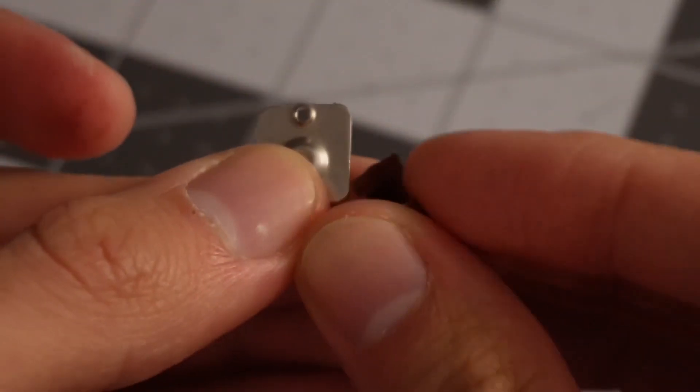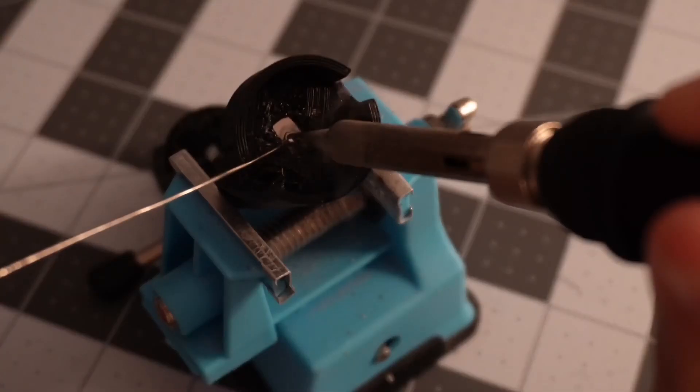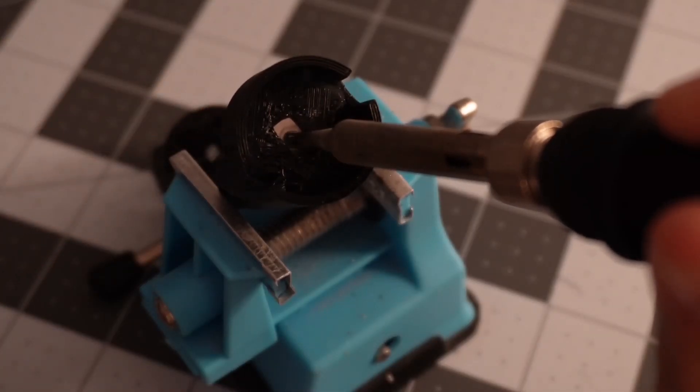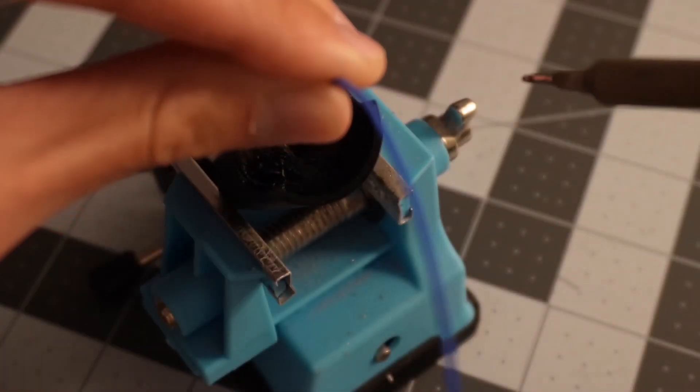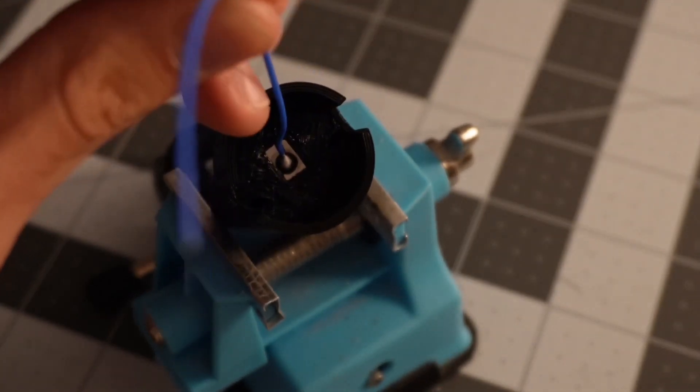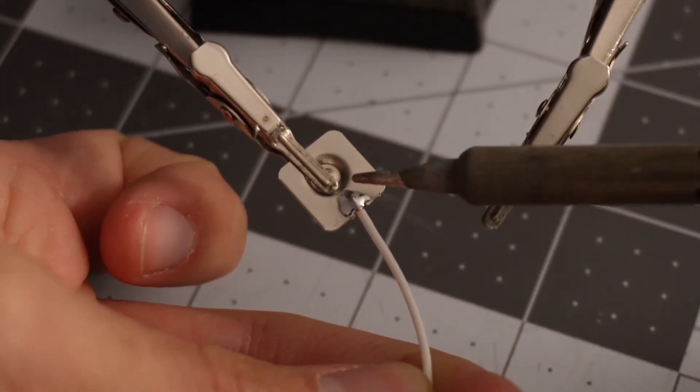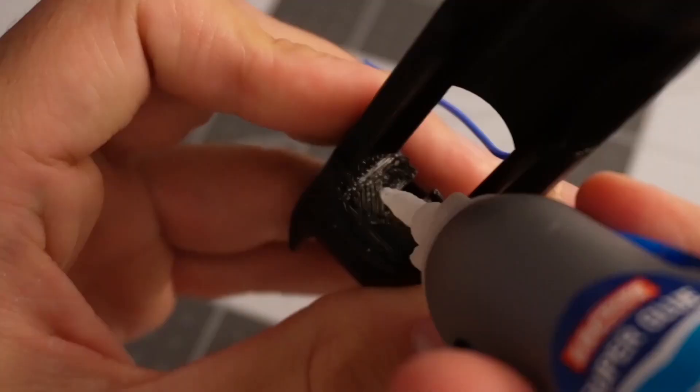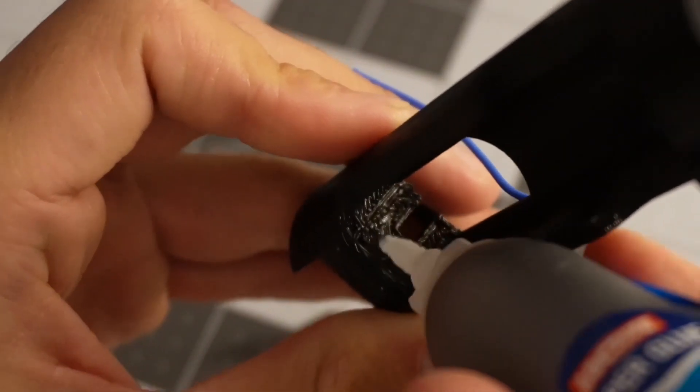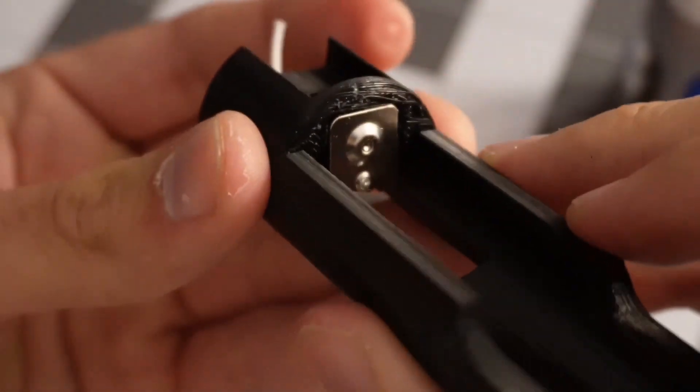With the NeoPixel connector all set up, I think next I'm going to install the battery contacts. Starting with the negative contact, I thought it'd be easier to set up with it already in its place in the chassis. But with the positive contact, I could solder the wire to it like normal. And then to help hold it in place, I'm going to use some Loctite. And with that, we have the NeoPixel connector and the battery contacts all set up in the chassis.